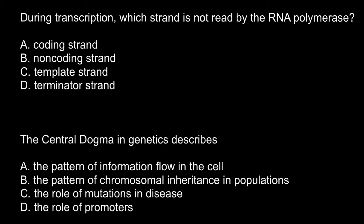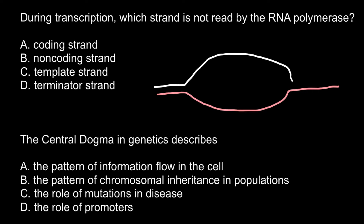If you're confused which answer to choose, here is my explanation. Imagine here is one strand of the DNA and here is another strand of the DNA — two strands shown during the process of transcription. Here is a messenger RNA, and I'm using the same color for this messenger RNA and for this strand of the DNA.